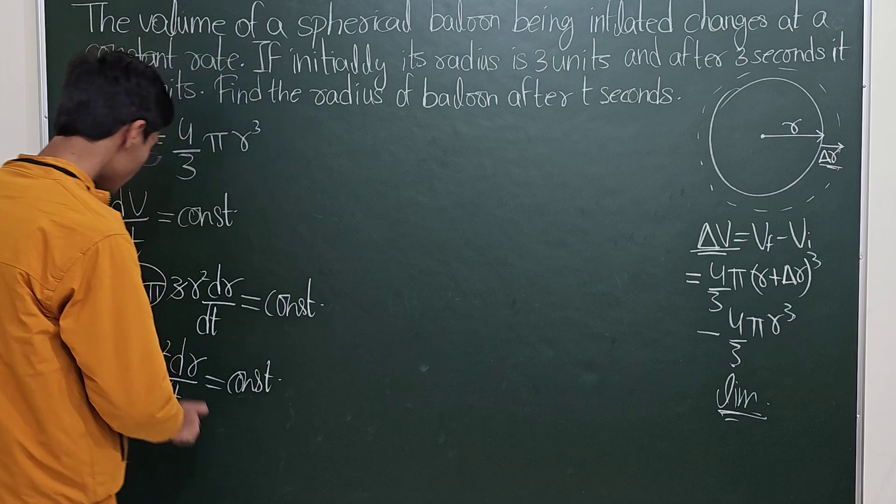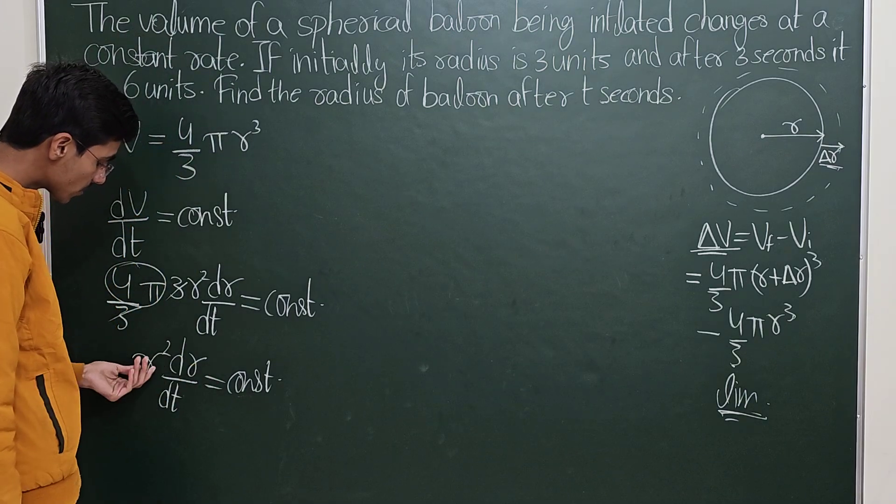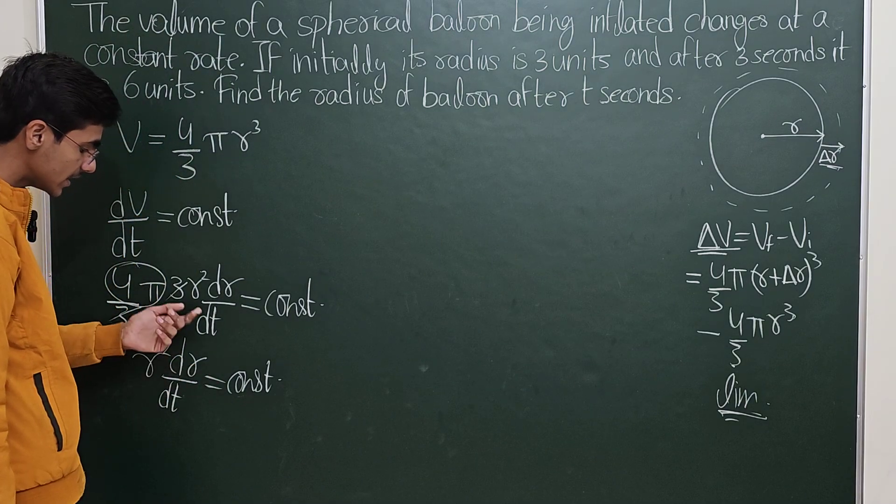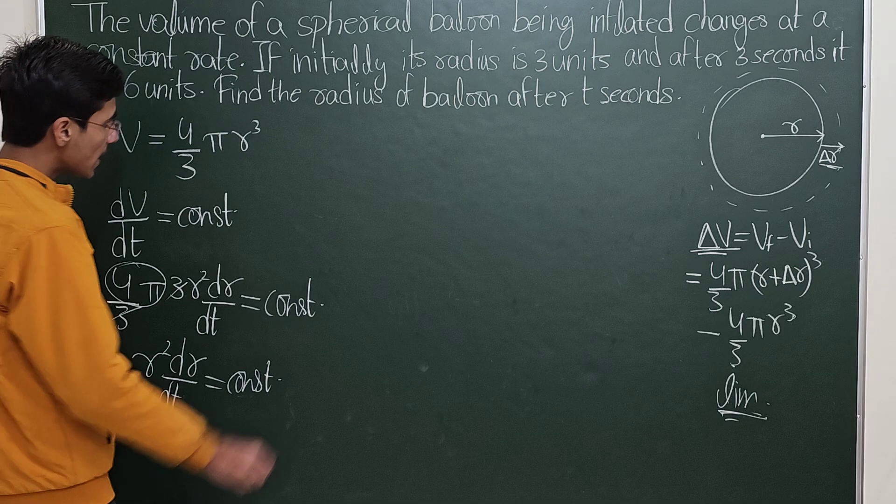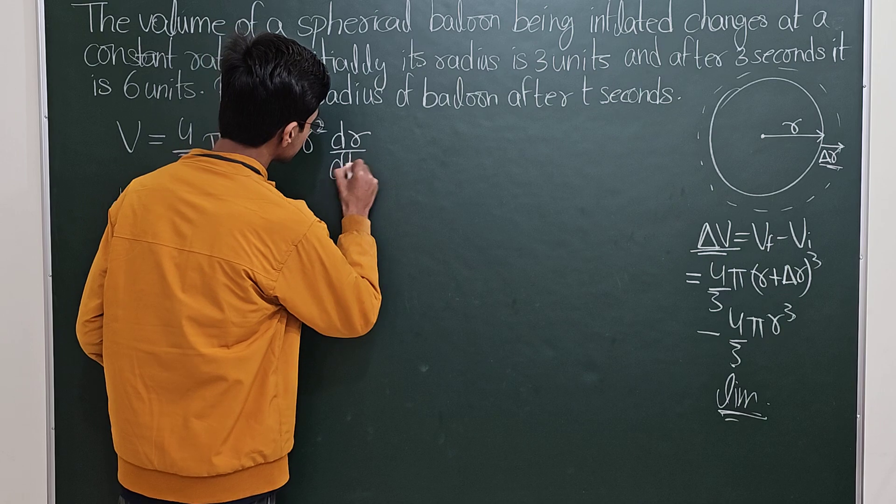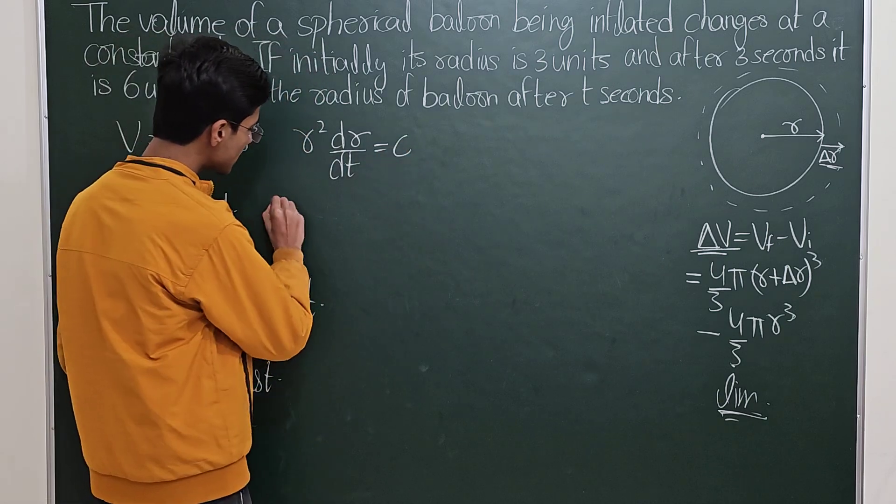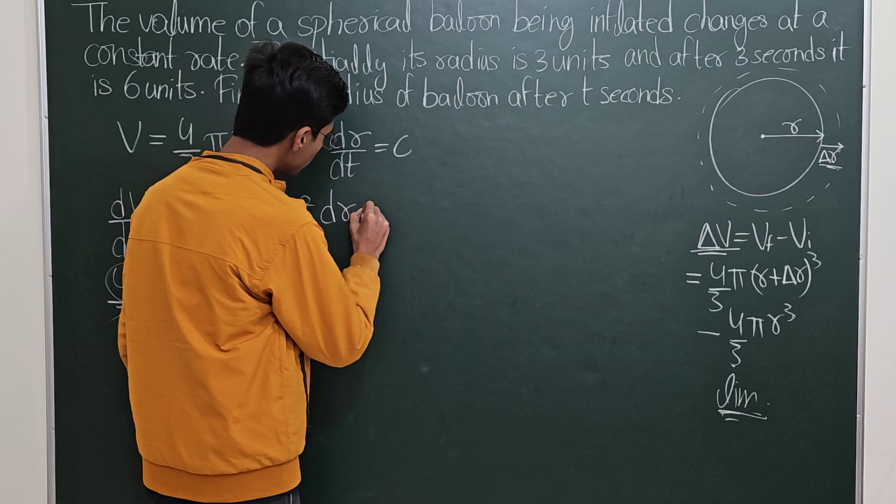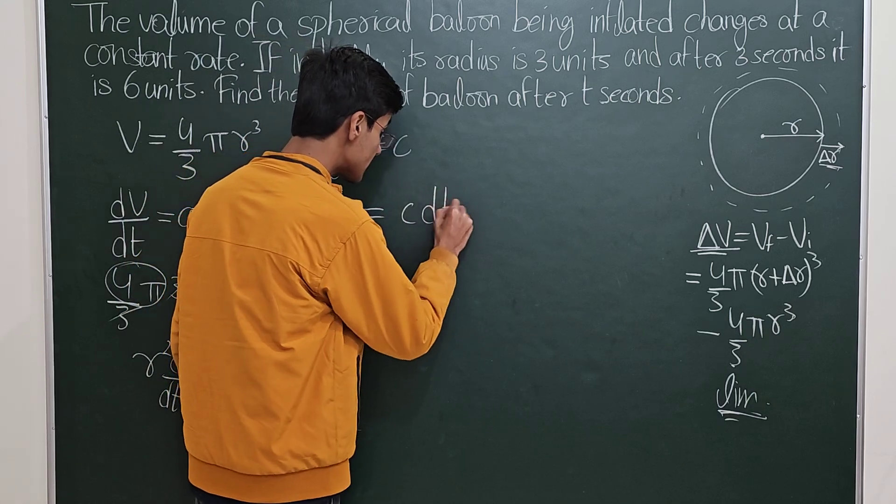I think that is maybe the reason Greeks were not able to solve such problems. They couldn't introduce at the right time in the right place the concepts of limit. But never mind, we can solve the problem. We have our differential equation. Getting back to our solution, r² dr/dt is a constant. Now I will say that this constant is c.